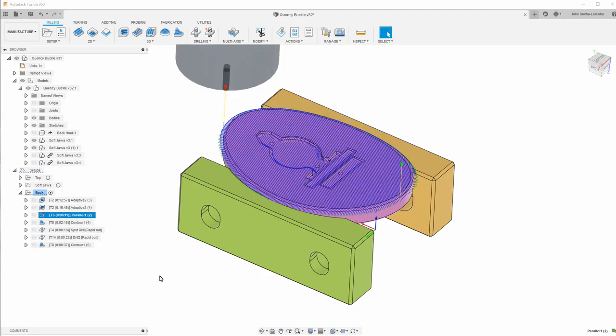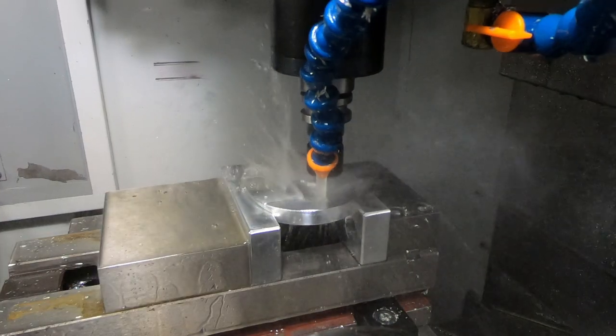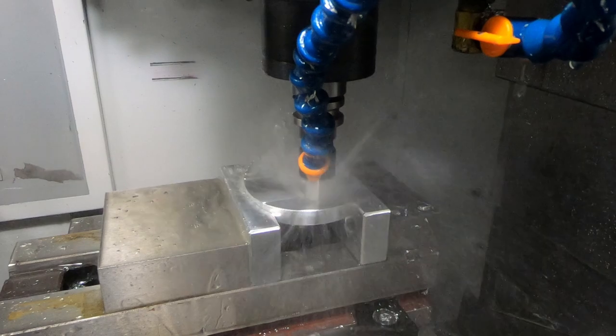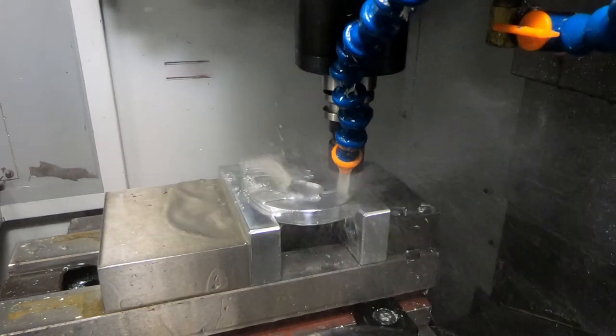Next up is the parallel operation which smooths out the back. This is using a one-eighth inch end mill running at about 22,000 RPM.